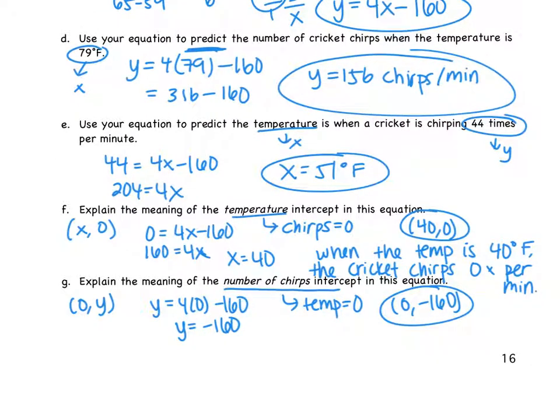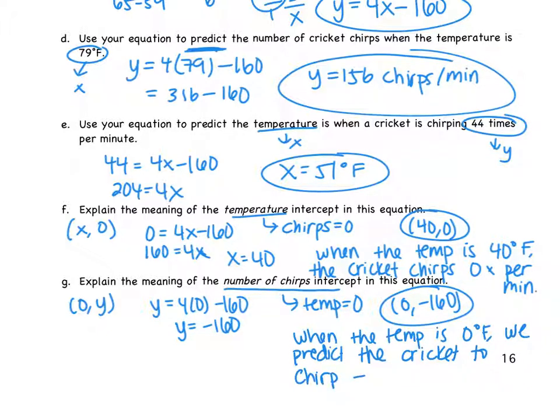So again, we care about what that means. What does that mean to us? When it's zero degrees out, it chirps, it's negative. Yeah, keep going. It doesn't chirp. When the temperature is zero degrees Fahrenheit, I'm going to say we predict. We predict the cricket to chirp negative 160 times per minute. Now, does that make sense? No. No. It doesn't mean we did anything wrong. It just means that practically this point does not have much significance to us.